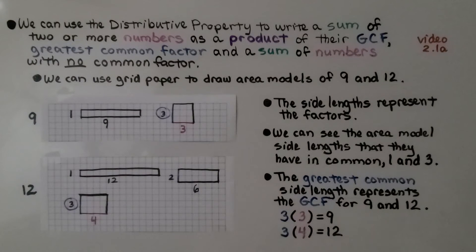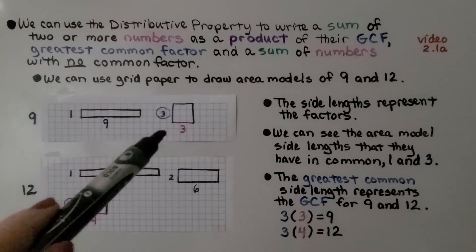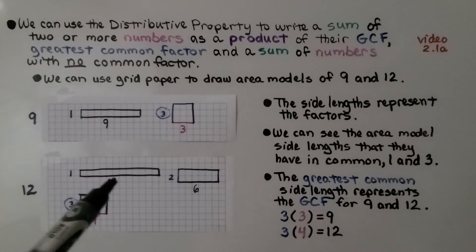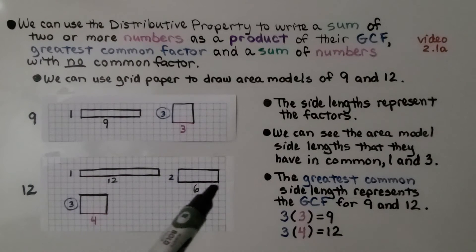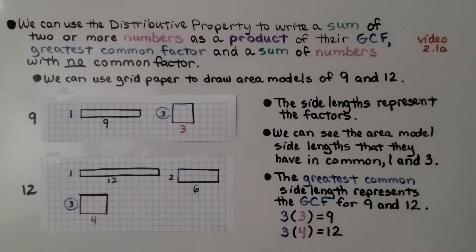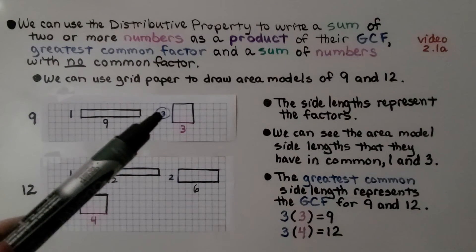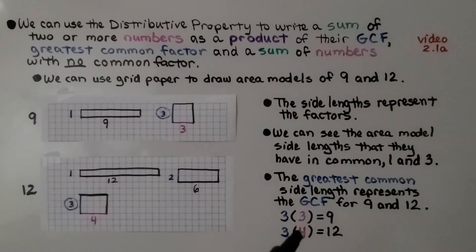We can use grid paper to draw area models of 9 and 12. For 9, we can do 1×9 or 3×3. For 12, we can do 1×12, 2×6, or 3×4. The side lengths represent the factors. Looking at the area model side lengths they have in common, we see they share 1 and 3. The greatest common side length represents the GCF, which is 3. So we have 3×3 equaling 9, and 3×4 equaling 12.